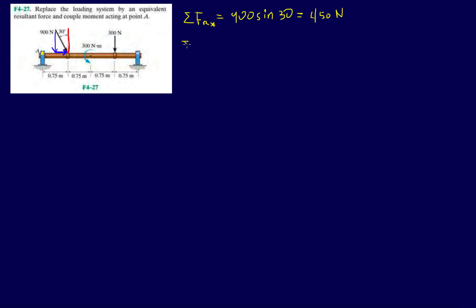Let's do FR_Y. This is positive X, this is positive Y. So in the Y direction, I have minus 300 Newtons, and then the negative Y component of that 900 Newton force: minus 900 cosine 30.